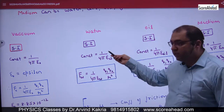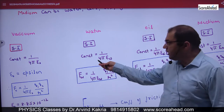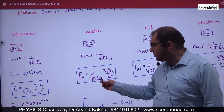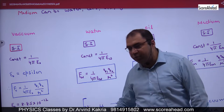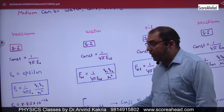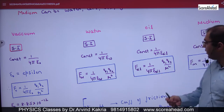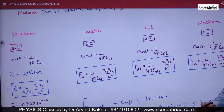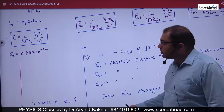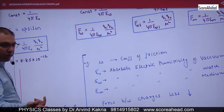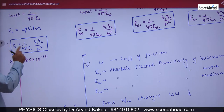If these charges are in water, then the value of the constant becomes 1/(4πε_water), giving F = (1/4πε_water)(Q1Q2/R²). You need to remember the value of ε₀ for vacuum, which is 8.8 × 10⁻¹². For other media like water or oil, you would use the corresponding epsilon value for that medium.